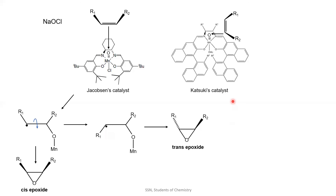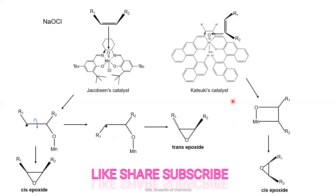But in the case of Katsuki's catalyst, it will proceed through a four-membered cyclic transition state, which will predominantly give us the cis epoxide. I will go into detail in a separate video. Thank you.